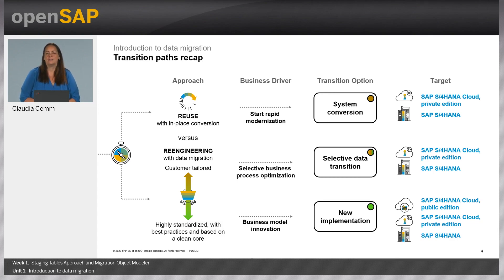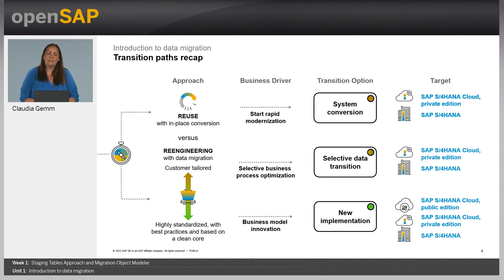SAP S/4HANA comes with three different transition scenarios: the system conversion, the selective data transition, and the new implementation. The two distinct products provided by SAP S/4HANA are SAP S/4HANA Cloud Public Edition and SAP S/4HANA Cloud Private Edition, which also comprises SAP S/4HANA on-premise. It is important to know that the SAP S/4HANA Migration Cockpit is positioned in the new implementation environment.